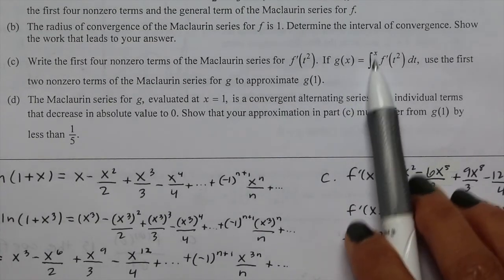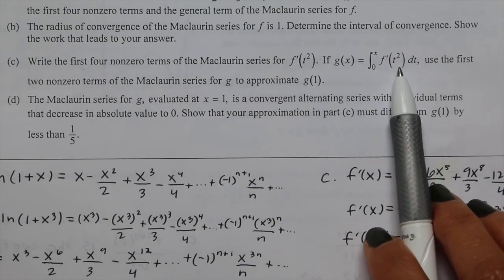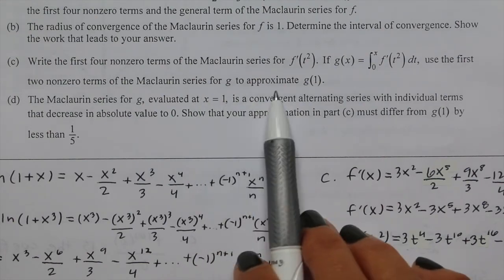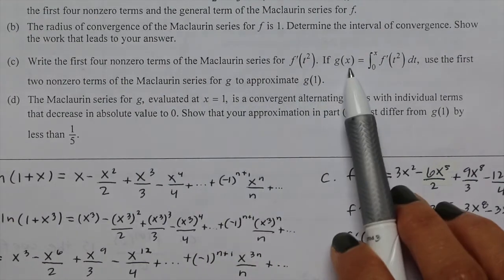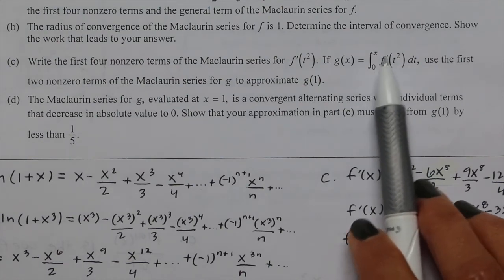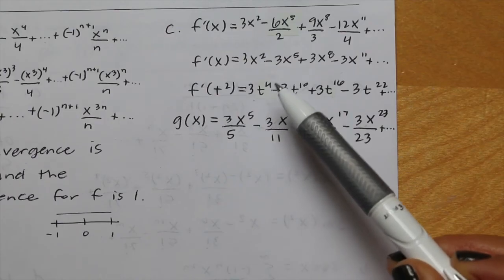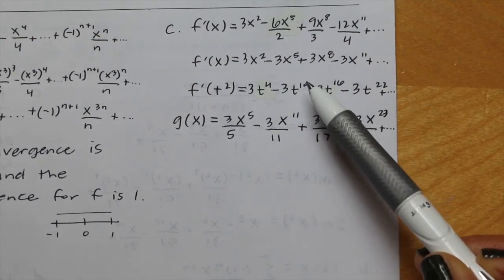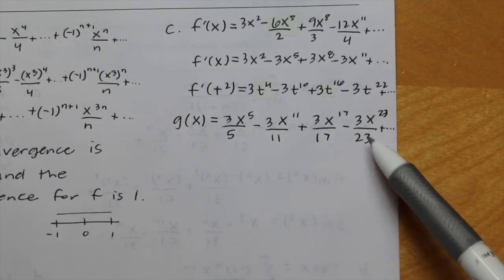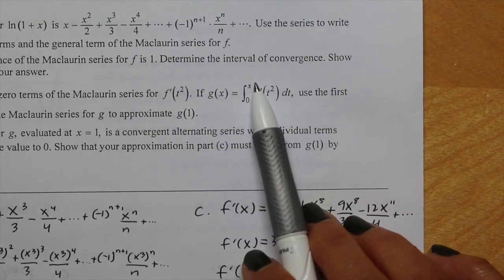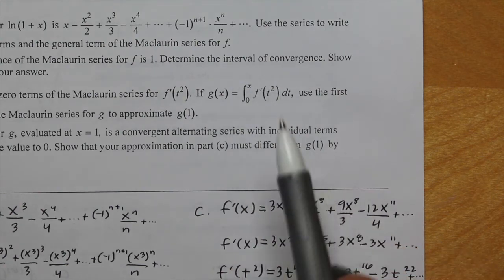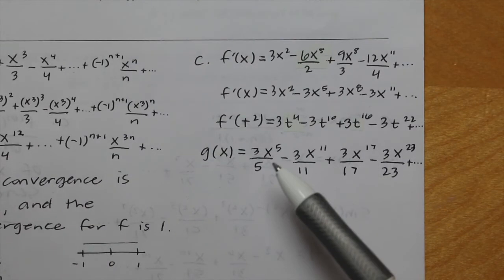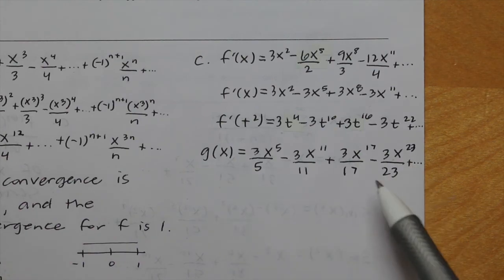G is the integral from 0 to x of f prime of t squared. To find g, we integrate f prime of t squared: adding 1 to the exponent 4 gives 5 in the denominator, adding 1 to 10 gives 11 in the denominator, and so on. Evaluating from 0 to x, plugging in 0 cancels all terms, so g of x equals 3x to the 5th over 5 minus 3x to the 11th over 11 plus 3x to the 17th over 17 minus 3x to the 23rd over 23.